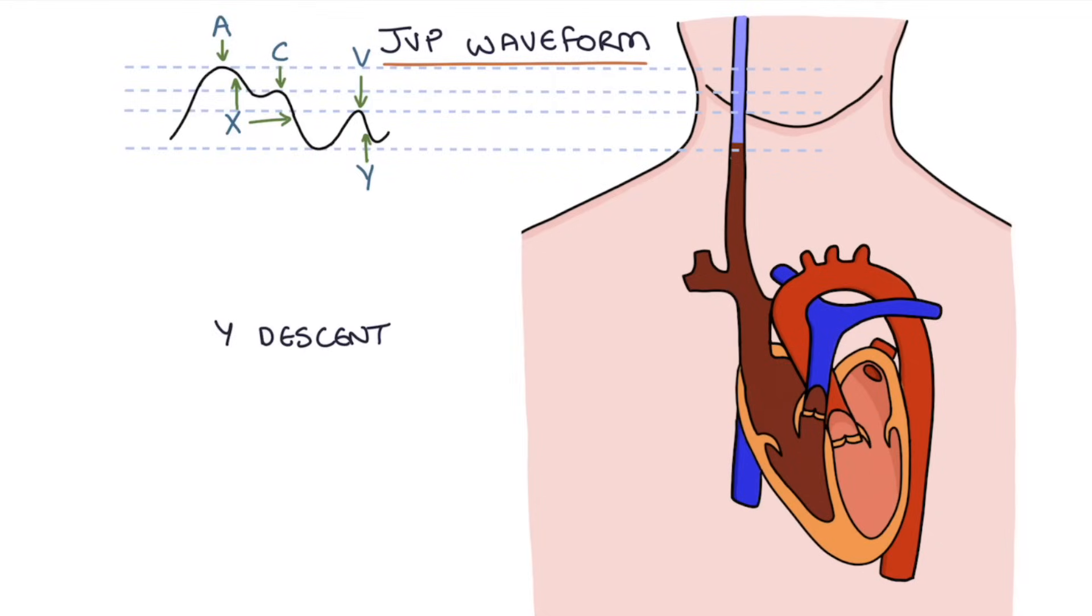And then finally, the Y descent occurs when the tricuspid valve opens and all the blood flows from the right atrium into the right ventricle. This emptying of the right atria causes the JVP to fall. At this point the whole cycle restarts and the atria contracts and causes an A wave, and so on.